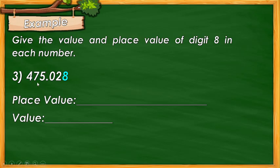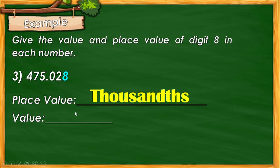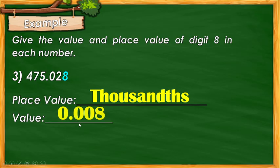Example number 3: we have 475.28 thousandths. The place value of digit 8 is correct — the answer is thousandths. What should be the value of digit 8? Since the place value of digit 8 is in the thousandths place, therefore the answer is 8 thousandths or 0.008.